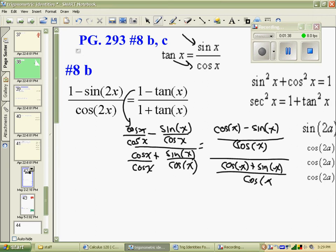Cosine in both top and bottom would cancel out, leaving cos minus sine over cos plus sine of x.